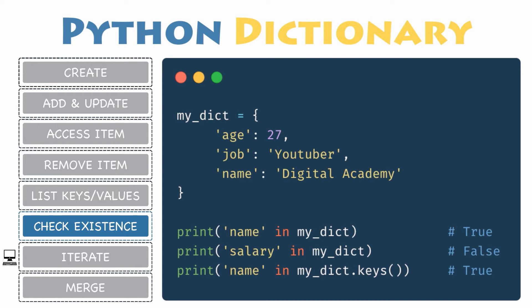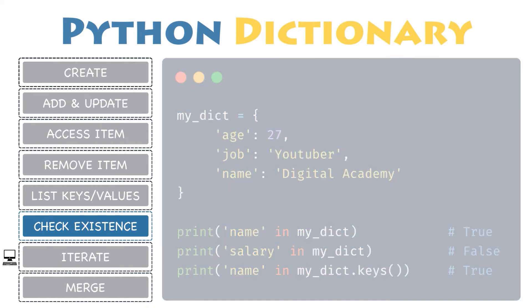Let's try with another one and test whether salary is present. That's right — salary is not inside the dictionary's keys. Consequently, it will only result in the boolean value False.